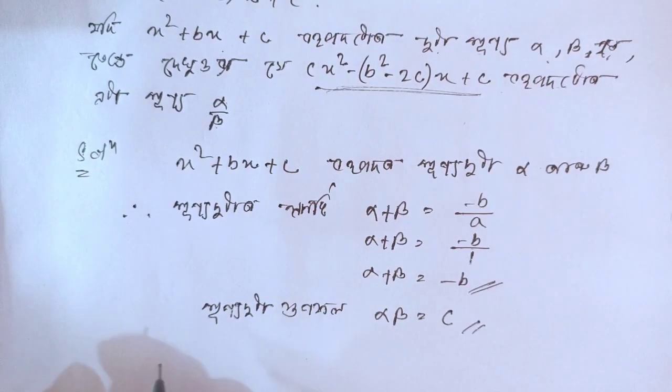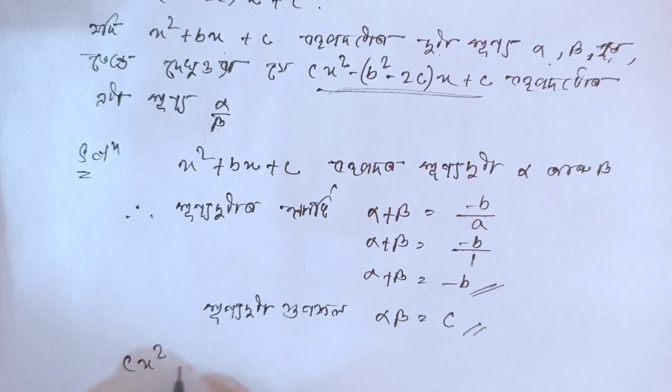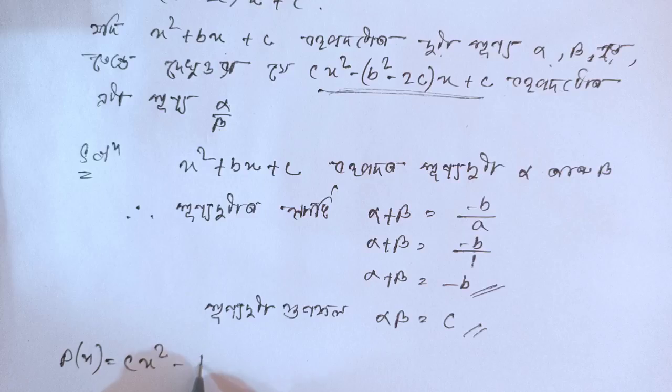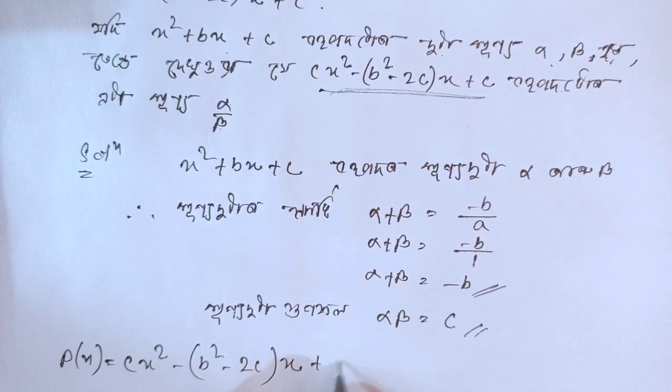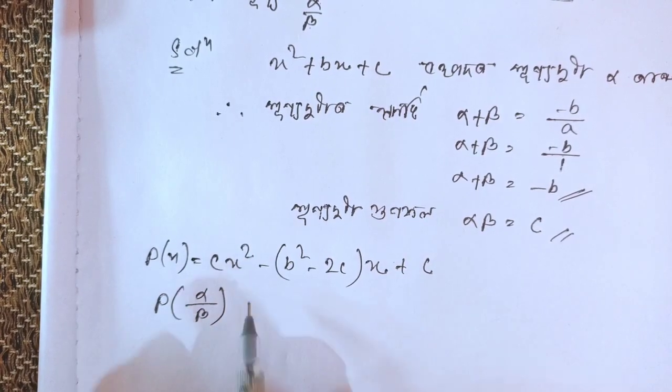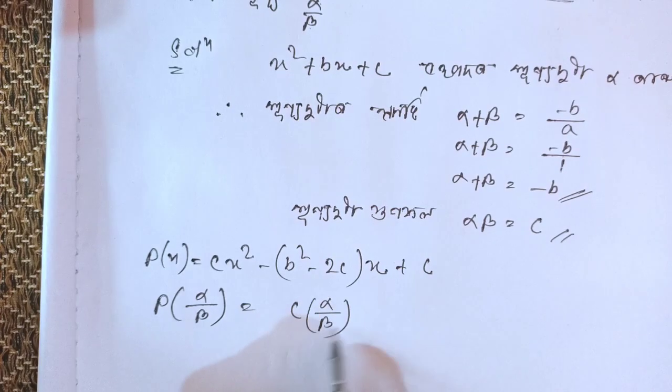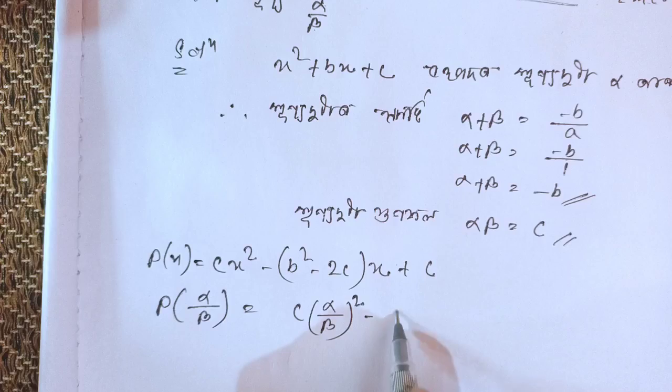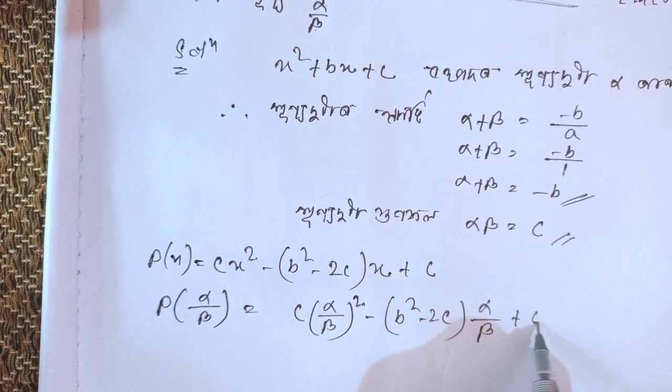The polynomial is P(x) = cx² - (b² - 2c)x + c. So P(α/β) = c(α/β)² - (b² - 2c)(α/β) + c. This equals cα²/β² minus (b² - 2c)α/β + c.